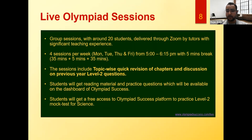There will be around 20 students in the class. Classes will be conducted on Zoom only. There will be four sessions per week — Monday, Tuesday, Thursday, and Friday. Class timing is 5 to 6:15 PM. We'll have a quick revision of each and every chapter, then discuss previous year Level 2 questions. Students will get reading material and practice questions available on the Olympiad Success dashboard, plus free access to the Olympiad Success platform for practicing Level 2 worksheets.